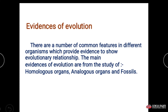Next is the evidence of evolution. There are different kinds of evidence which indicate that evolution takes place. There are a number of features in different organisms which provide evidence showing the evolutionary relationship among them. These include homologous organs, analogous organs, and fossils.